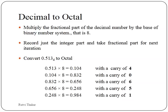Second step: 0.104 into 8 gives 0.832 with carry of 0. Again taking 0.832 into 8 gives 6.656, written as 0.656 with carry of 6. This continues from top to bottom till we get 0 or till the specified bits after the decimal value. So 0.513 decimal is equivalent to 0.40651 in octal.